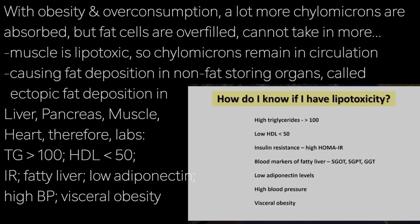A clinician can recognize this by looking at the fact that these people have high triglycerides — and I say 300 is too big a number, it should be less than 100 — low HDL, markers of insulin resistance, blood markers of liver dysfunction, low levels of a hormone that healthy fat cells elaborate called adiponectin, high blood pressure, and visceral obesity.